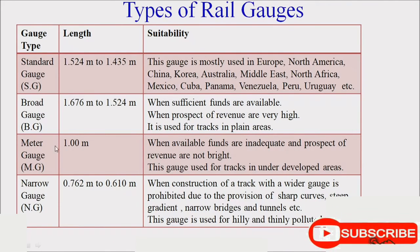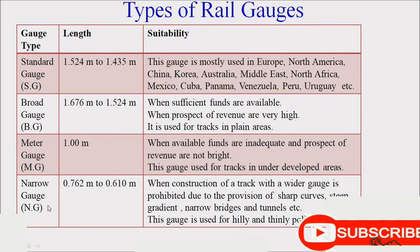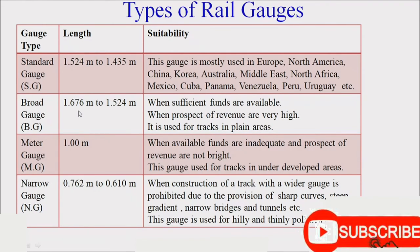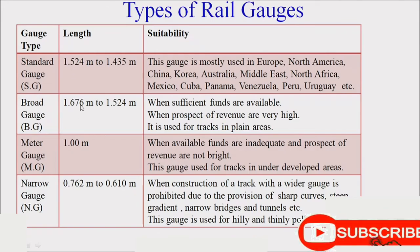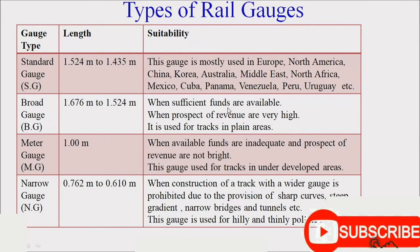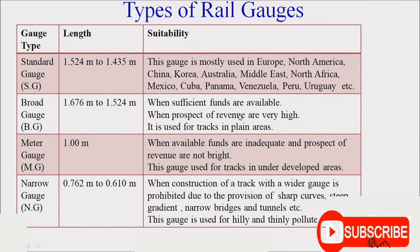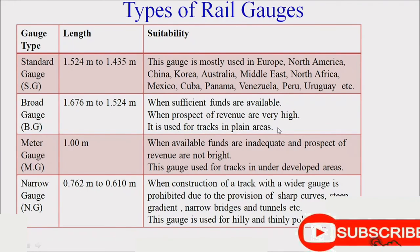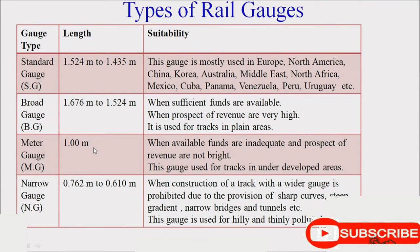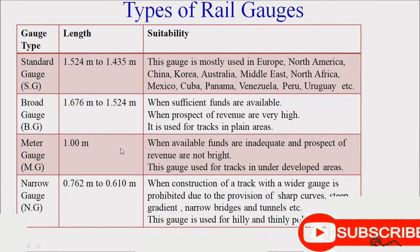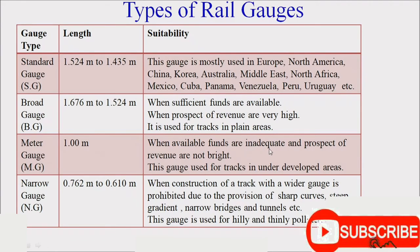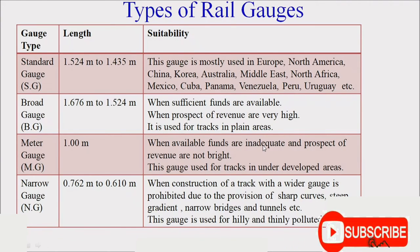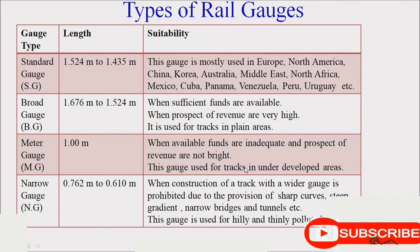In India, broad gauge, meter gauge, and narrow gauge are used. Broad gauge has a length of 1.524 m to 1.676 m, used when sufficient funds are available and revenue prospects are high — it is normally used in plain areas. Meter gauge has a length of 1 meter and is used when sufficient funds are not available, typically in underdeveloped areas.